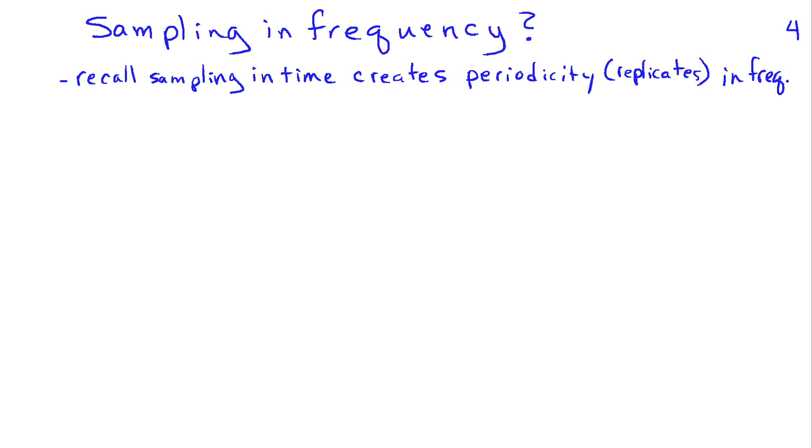As we conclude this particular presentation, I want to explore the consequences of sampling in frequency. Now you recall, we've looked at what happens when you sample a continuous time signal and you sample it in time. What happened was that when you sample in time, you create periodicity in frequency because you take the original signal spectrum and you replicate it at multiples of a sampling frequency. The frequency domain and time domain tend to be duels of one another. So it turns out we're going to see a similar effect. But let's look at it in a little more detail.